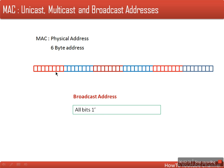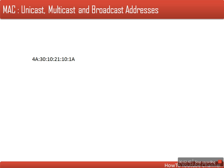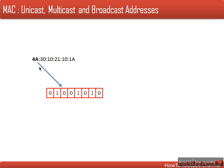To summarize: in the case of all 1s it is a broadcast address; if the least significant bit of the first byte is 0 it is a unicast address; otherwise it is a multicast address. For example, take a MAC address starting with 4A. We convert the first byte into binary format — the binary representation of 4A has a least significant bit of 0, so we can say this is a unicast address.